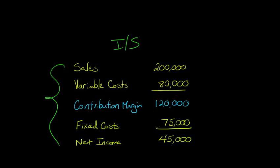So we've got our sales here, our variable costs, and then we subtotal out our contribution margin. Then we deduct the fixed cost and it arrives at our bottom line net income.